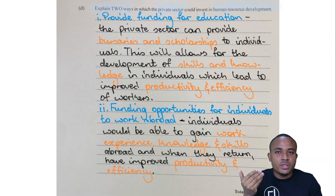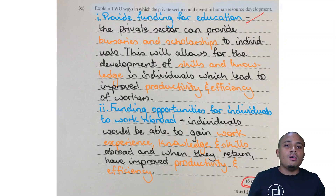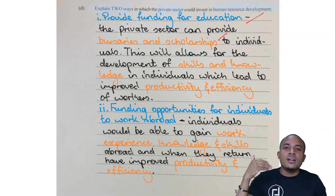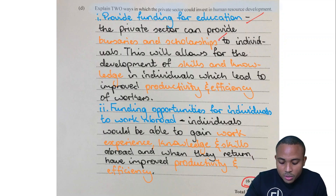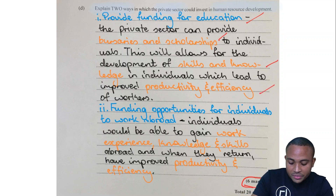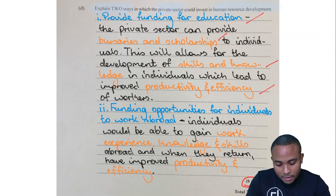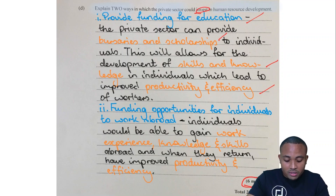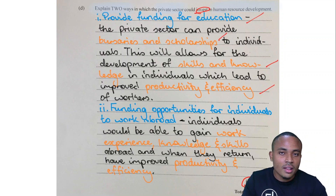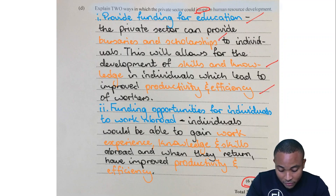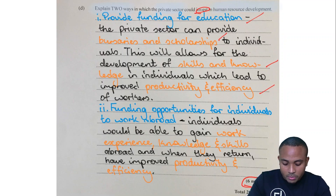The first way is that the private sector could provide funding for education — one mark. This could be in the form of bursaries and scholarships to individuals, which allows for the development of skills and knowledge. This will lead to increased productivity and efficiency of workers, showing a return on that investment.